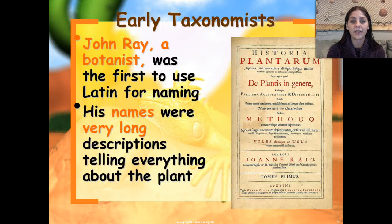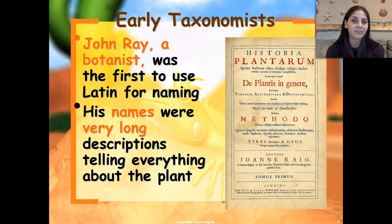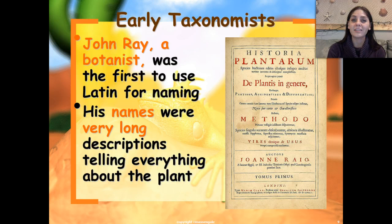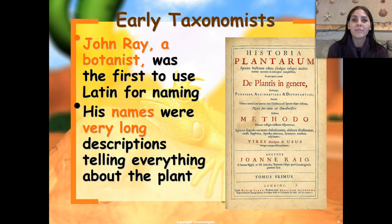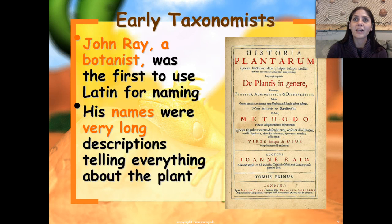Another taxonomist was Jean Ray. He was a botanist — botanists study plants — and he was the first one to use a Latin naming system. Instead of using only two names, he used many, and his descriptions were long and told you everything about a plant. So if you saw a rose, instead of using the word rose, you would say that plant with red petals that smells good and is very beautiful with thorns and is in a bush. As you could imagine, people don't want to sit around describing a rose that way, so they came up with a different classification system.